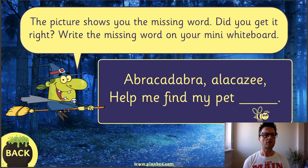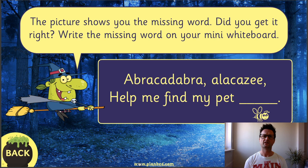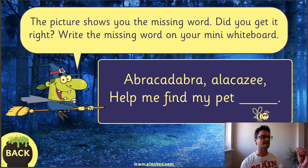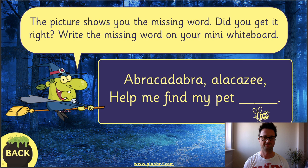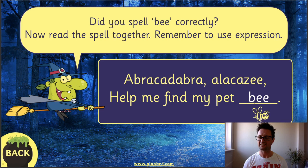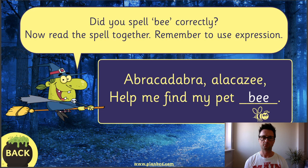I'd like you to have a go at writing the word 'bee' on a piece of paper. Let's stretch the word out and see if that helps us work out how to spell it — I'm going to stretch it out like a piece of chewing gum. Now let's read the spell together. Are you ready? Here we go: 'Abracadabra alakazee, help me find my pet bee.' Well done everybody!